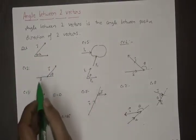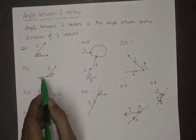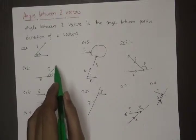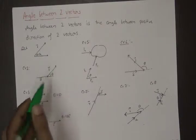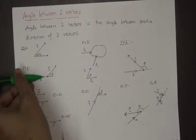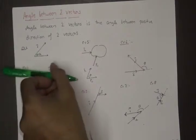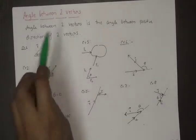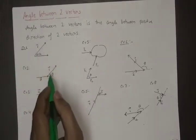Second example: this is the vector A and this is the vector B. The positive direction of A is in this direction and the positive direction of B is in this direction. The angle between them is θ.